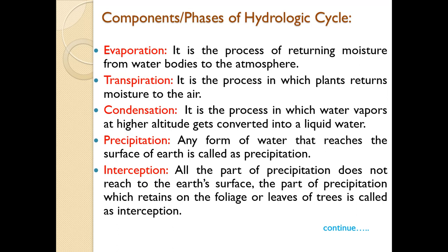The first phase is evaporation — the process of returning moisture from water bodies to the atmosphere. Next is transpiration, the process in which plants return moisture to the air through their leaves or foliage. Next is condensation, the process in which water vapors at higher altitude get converted into water droplets or liquid form.